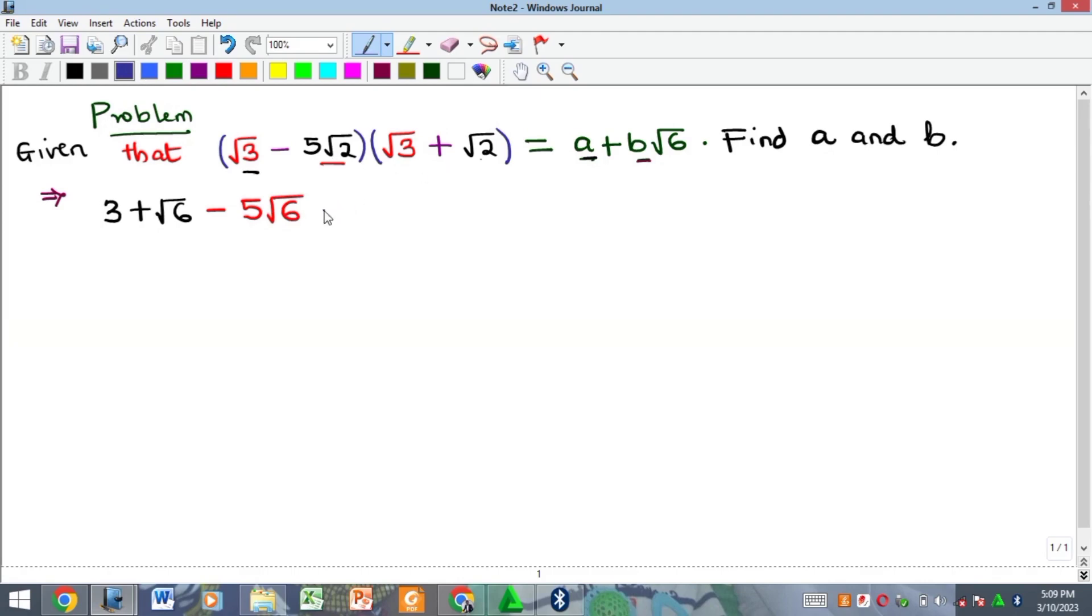The next one, minus times plus is also minus. And then 5 root 2 times root 2 is going to give us 5 times 2. Recall that this is equal to what you have on the right hand side.